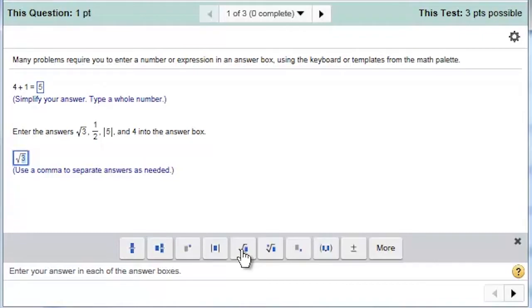If you are required to enter multiple answers, you will need to separate them with commas. Use the arrow keys in the bottom right hand corner of the keyboard to exit the square root before typing your comma.